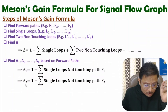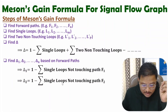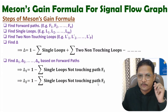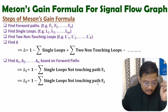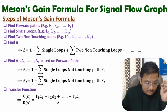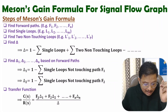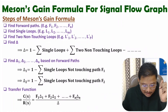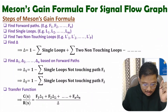Likewise, for delta 2, it is 1 minus summation of single loops which are not touching forward path F2. After that, we will identify the transfer function using Mason's gain formula: that is F1·delta1 plus F2·delta2, up to Fn·delta_n, divided by delta.